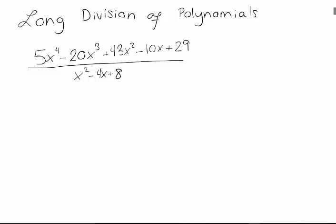My numerator is a polynomial of degree 4 and my denominator is a polynomial of degree 2. So before I can use the method of partial fractions, I have to do some long division.